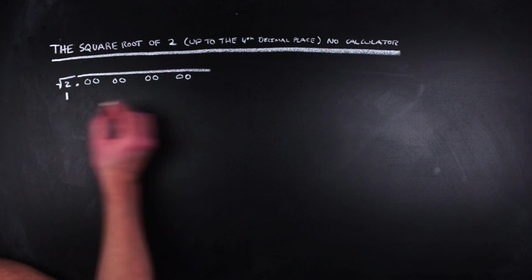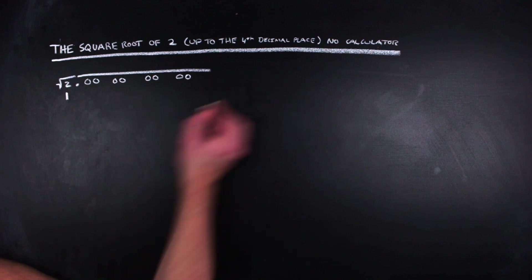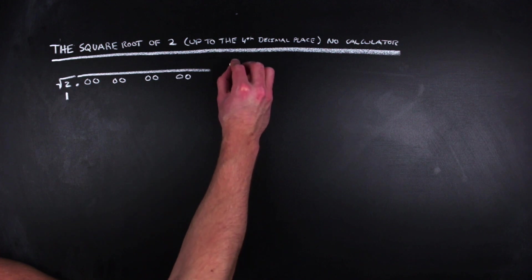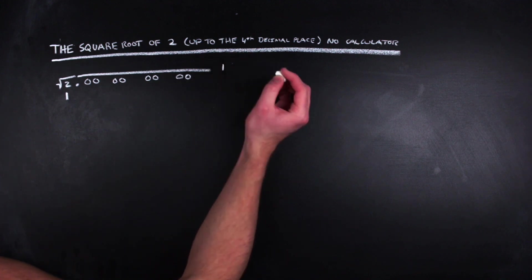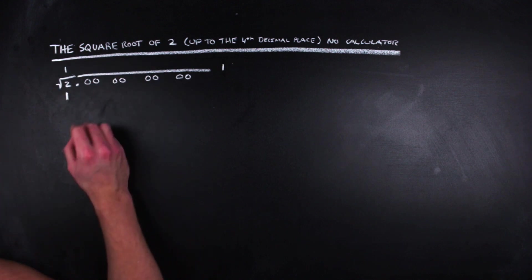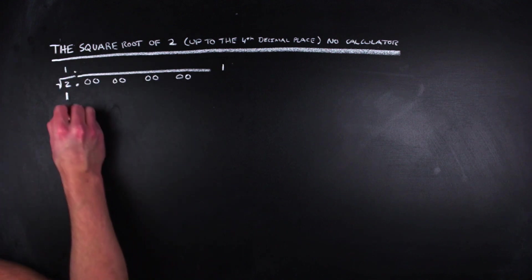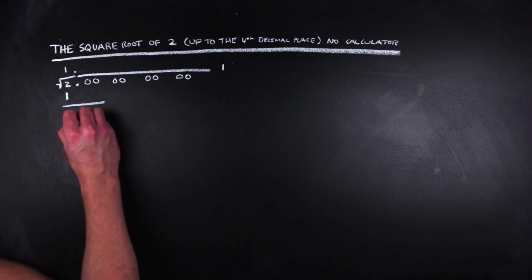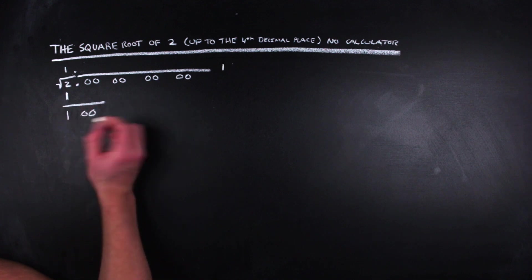Once we have that, we can go ahead and start computing. The largest natural number whose square is less than or equal to two is one. So we go ahead and place one under the two. Also, we'll place a one off to the side for some bookkeeping that we'll have to do, and then subtract one from two.